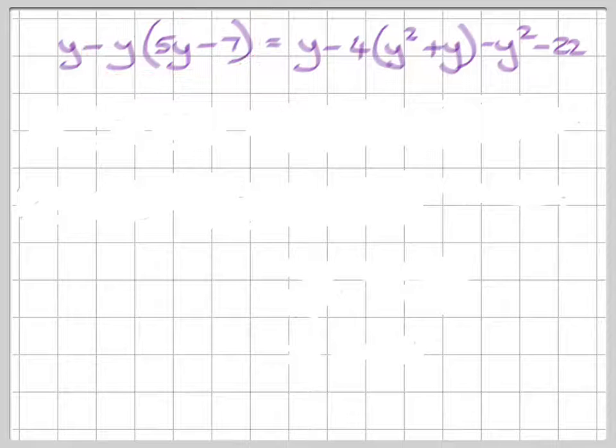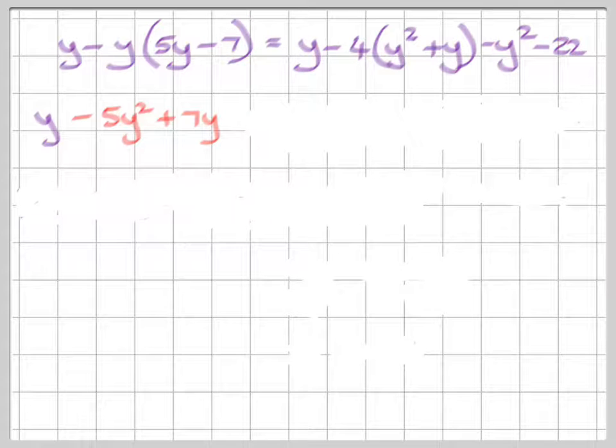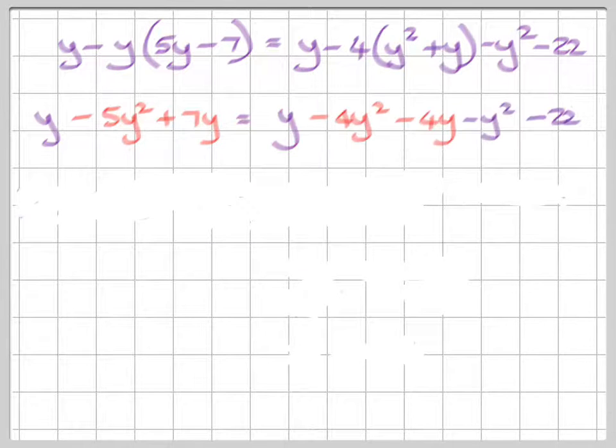Right, so what are we left with then? We are left with y = -5y² + 7y. Right. On the other side, we have y - 4y² and then we have - 4y. And then we write the rest in as it stands.